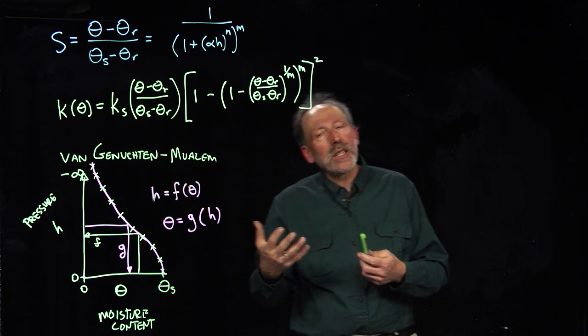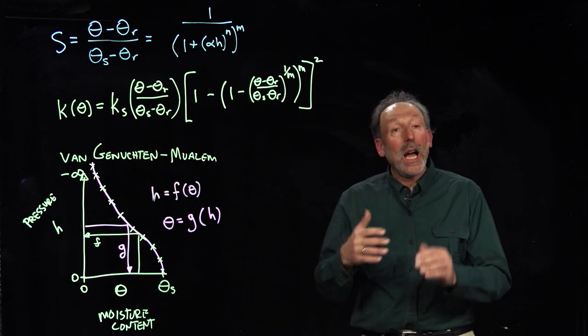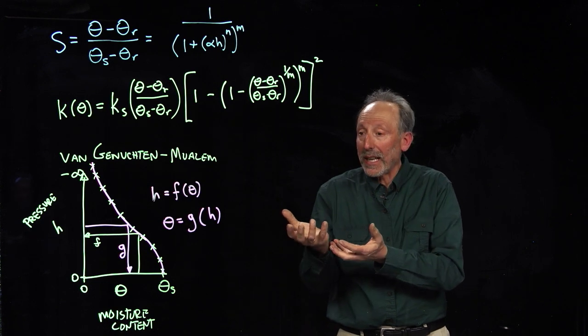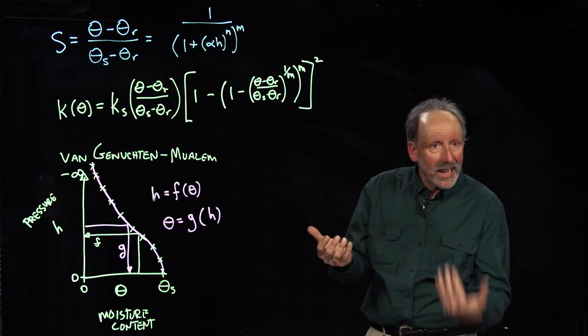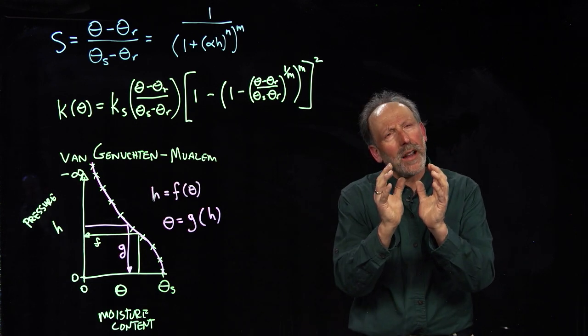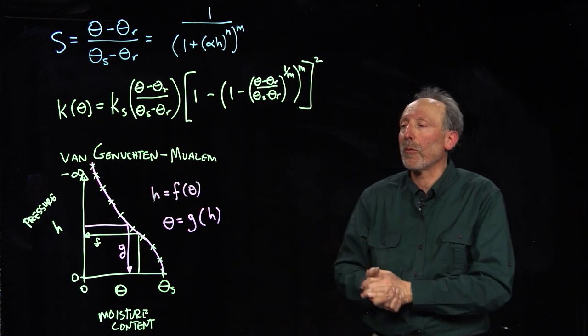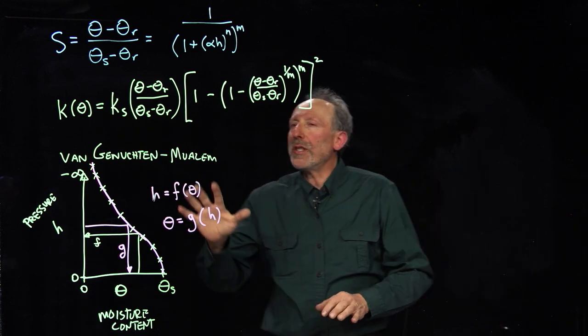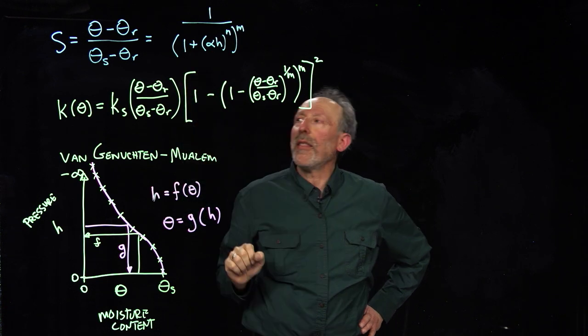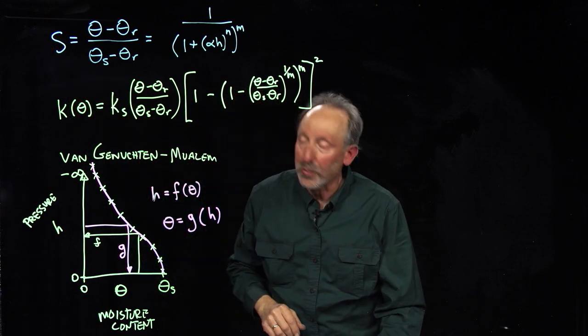So, Mualem looked at the family of functions and understood that if you have a particular soil which has a particular texture, it will retain water in some sort of relationship to that texture, and it'll also pass water, it'll have conductivity in relationship to that texture. So, in other words, there's some textural factors of the soil that really dictate the characteristics, conductivity and the water retention. So, using the expressions of Mualem, Van Genuchten simplified and brought them together and said, aha, here we're going to have this thing which we call saturation, the degree of saturation.